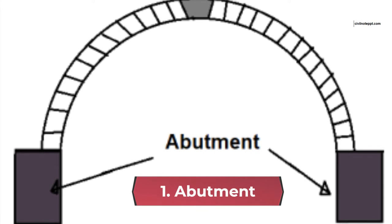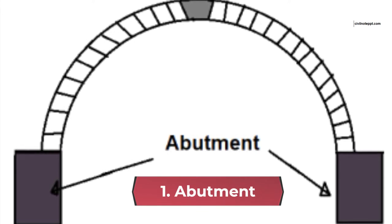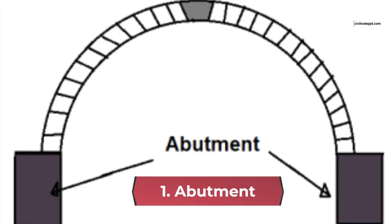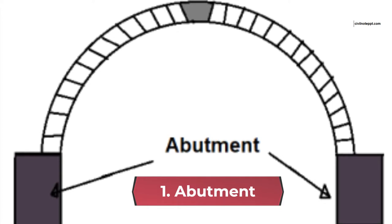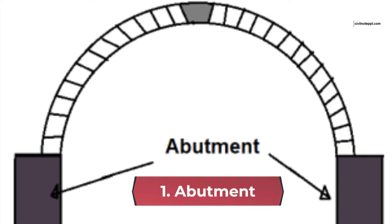1. Abutment. The abutment is the end support of an arch. In other words, it is the end support of a span on which the arch rests. The abutment may be walls or columns in the case of buildings, and retaining walls in the case of a bridge. An abutment should be designed in such a way that it can easily withstand arch thrust.